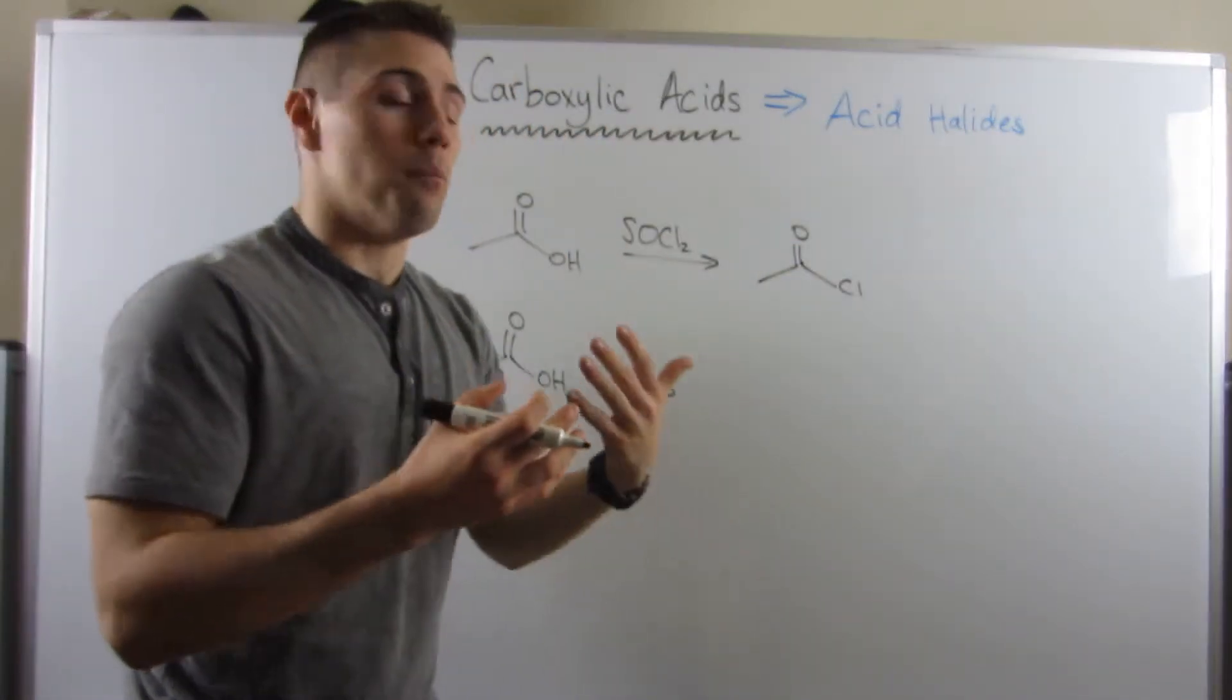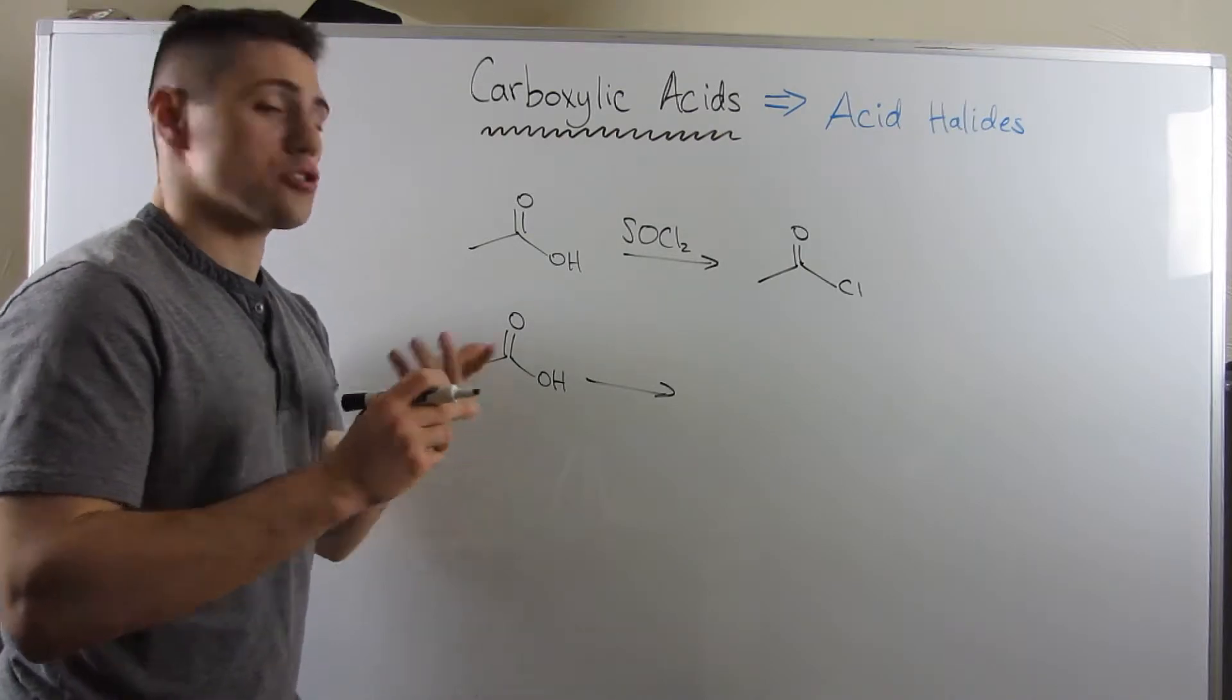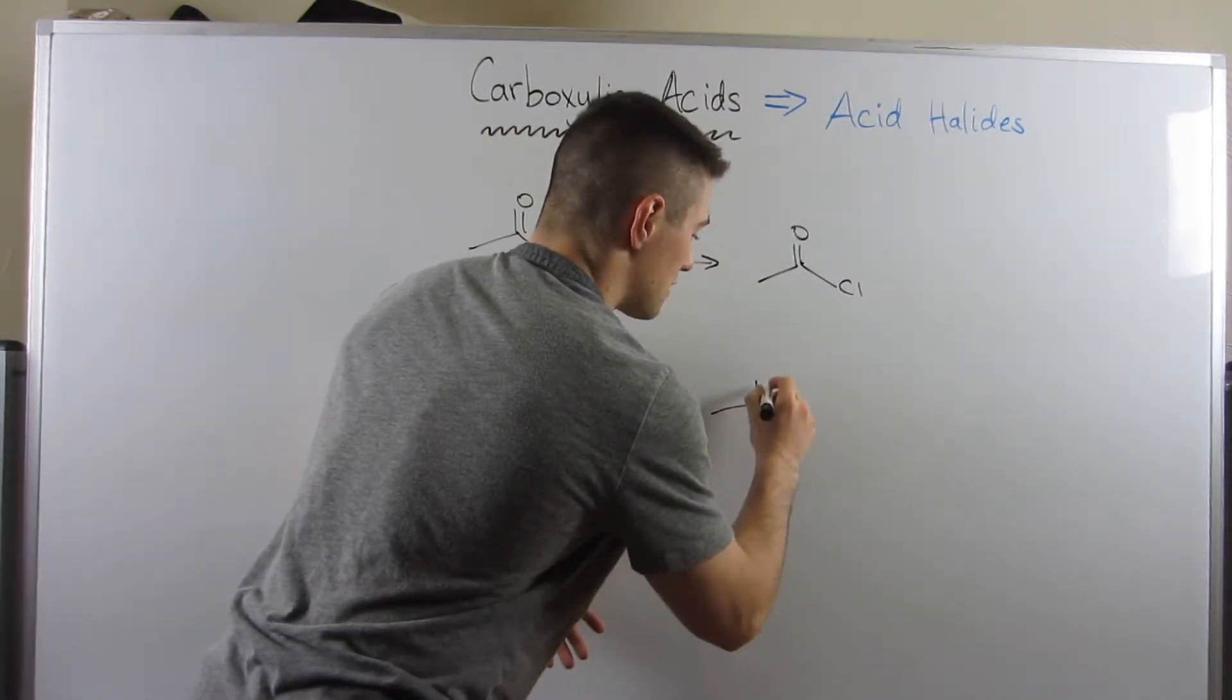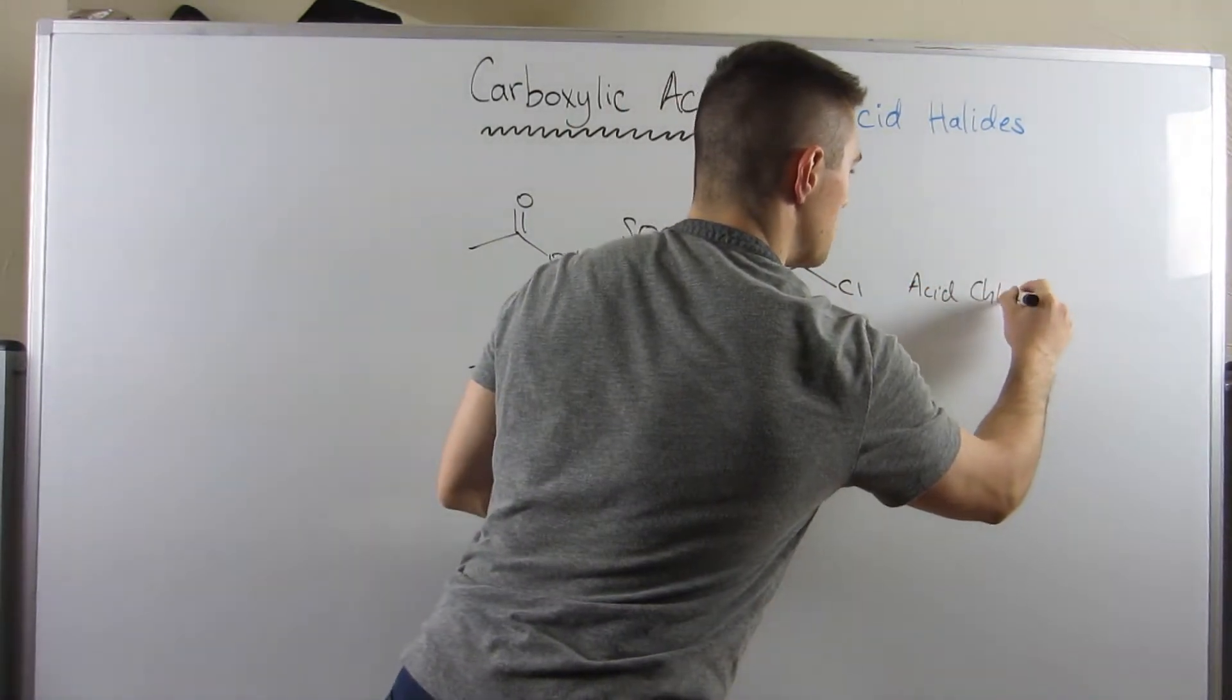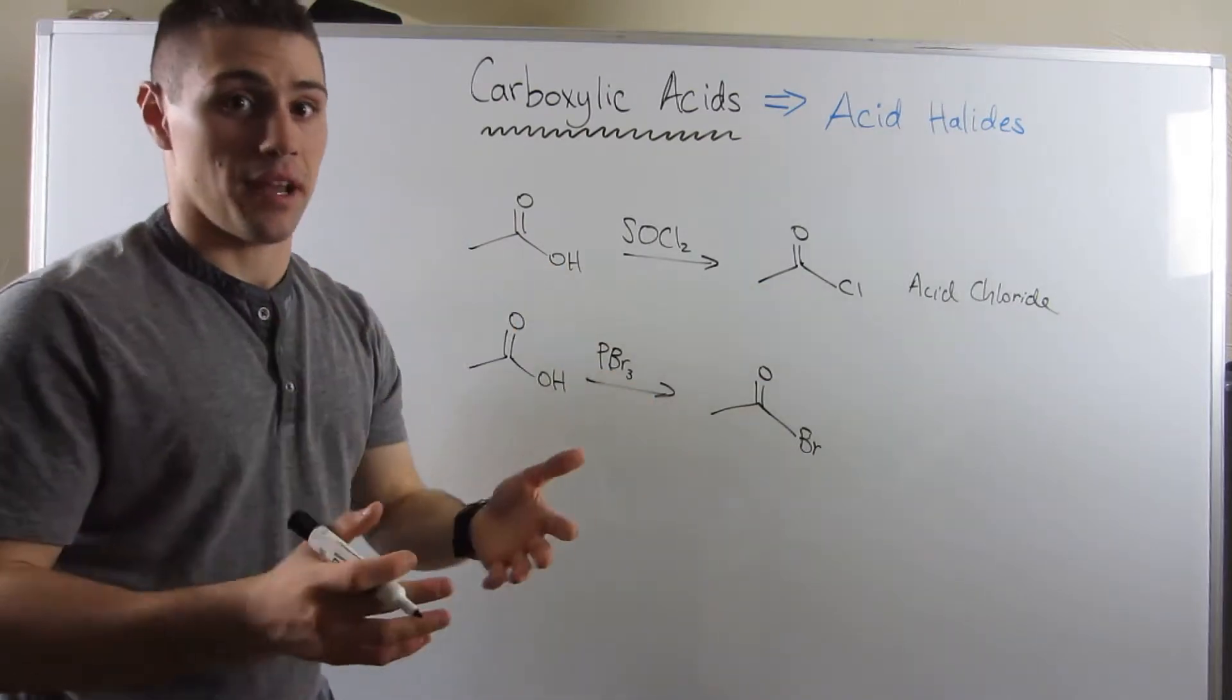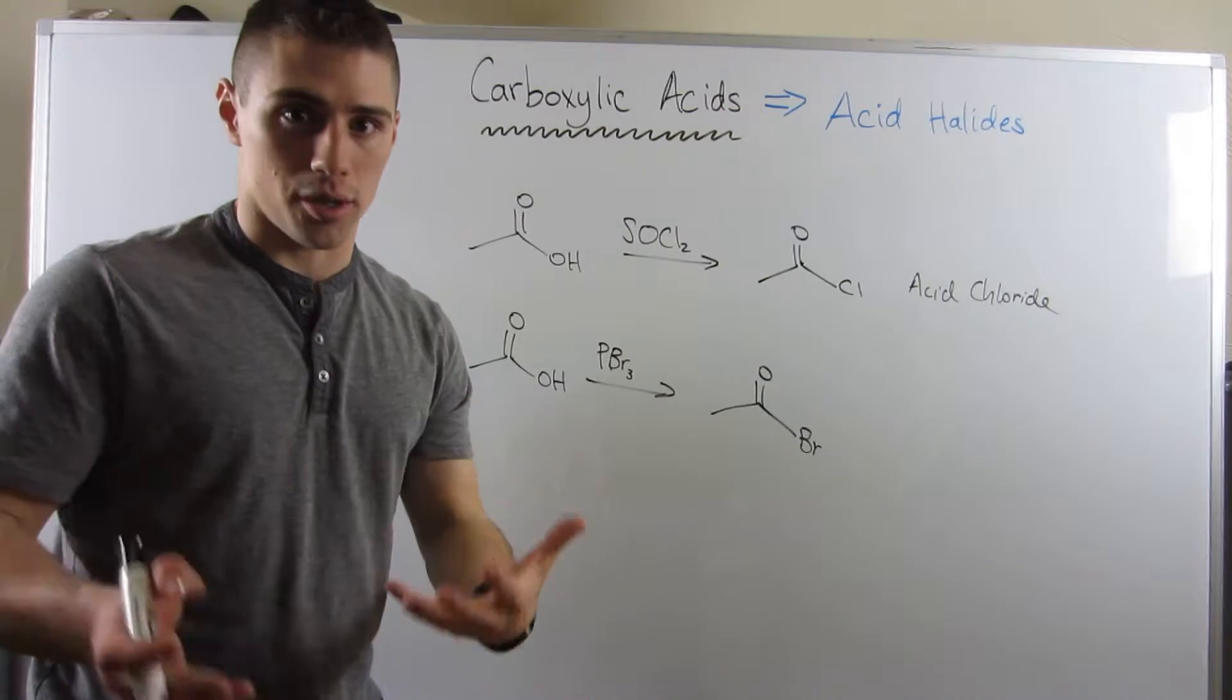It's a carboxylic acid, but you have a halogen, right? So instead of the OH, you have a Cl. Another way you can make a similar transformation occur is if you use a reagent called PBr3. You take a carboxylic acid, and instead of an acid chloride, you would instead make an acid bromide. These two functional groups behave the same, but the defining characteristic is your carbonyl, your C-double-bonded O, and then a halogen in place of the OH on the carboxylic acid.